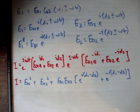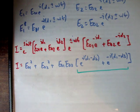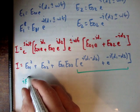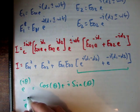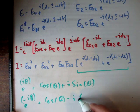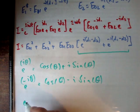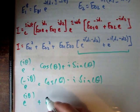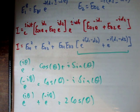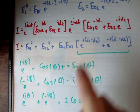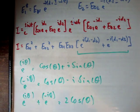Now, looking at Euler's formula: e^(iθ) = cosθ + i·sinθ, and e^(-iθ) = cosθ - i·sinθ. Therefore, e^(iθ) + e^(-iθ) = 2·cosθ. In our case, θ is alpha 1 minus alpha 2, so e^(i(α1-α2)) + e^(-i(α1-α2)) corresponds to 2·cos(α1 - α2).